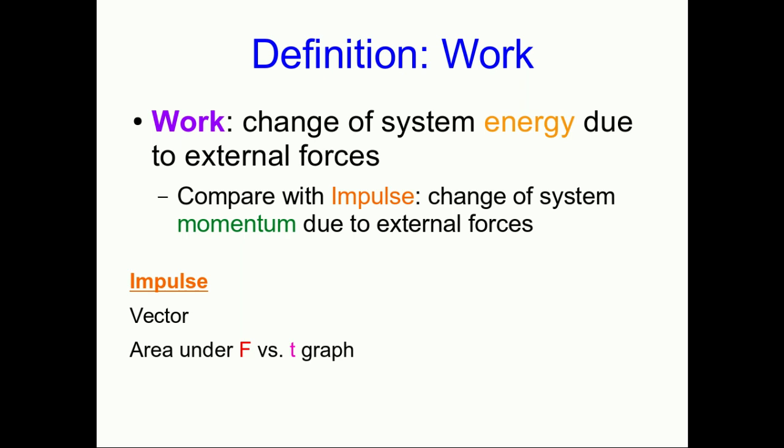Impulse is a vector, and we can get components of impulse by looking at the areas under the various force component versus time graphs. Work, though, is a scalar, so in some senses it's going to be easier to work with than impulse. You might ask whether it's an area under a graph — stay tuned and you'll see it is an area under some graph, but not a force versus time graph.